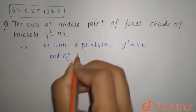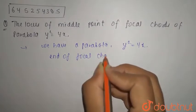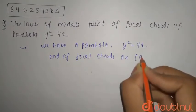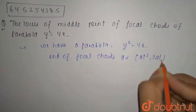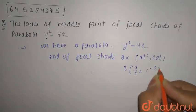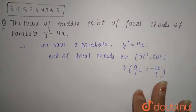The ends of focal chords are at (at², 2at) and (a/t², -2/t), where a = 1.